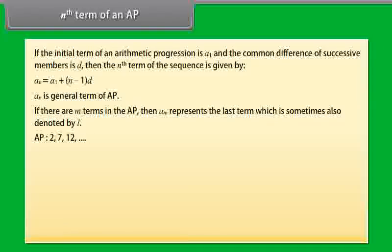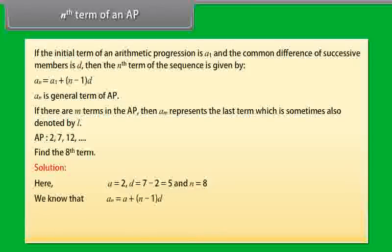Now by using the formula of nth term, let's find the 8th term of the given AP. Here, A is equal to 2, D is equal to 7 minus 2, which is 5, and n is equal to 8. We know that Aₙ = A + (n-1)D. So, A₈ = 2 + (8-1)×5, which is equal to 2 + 35, which equals 37.